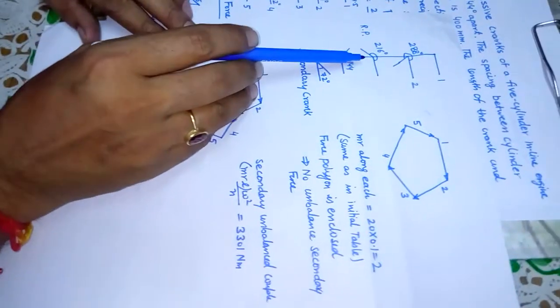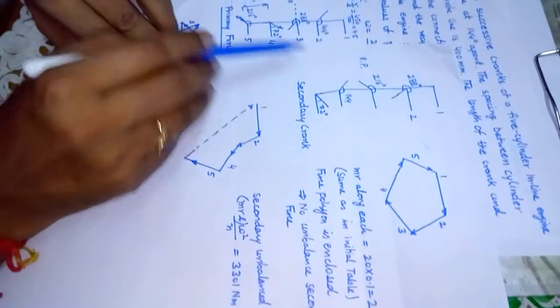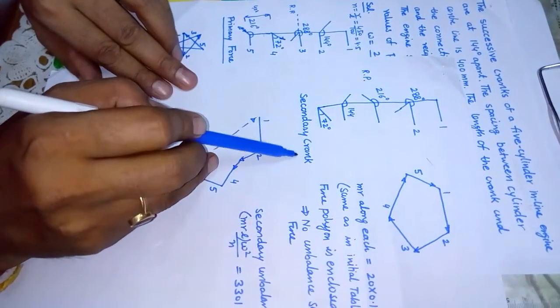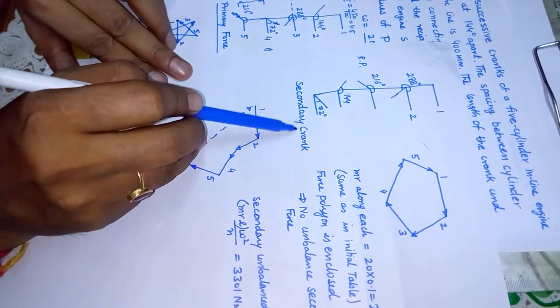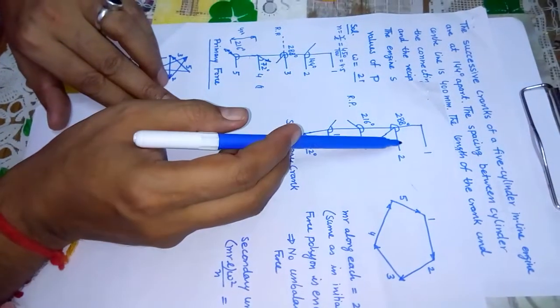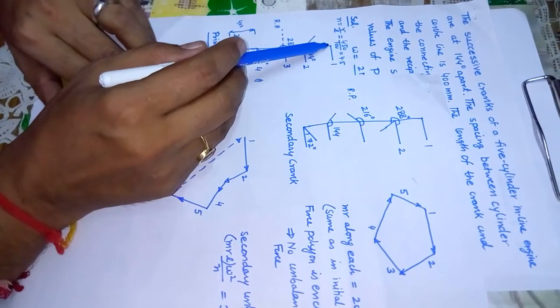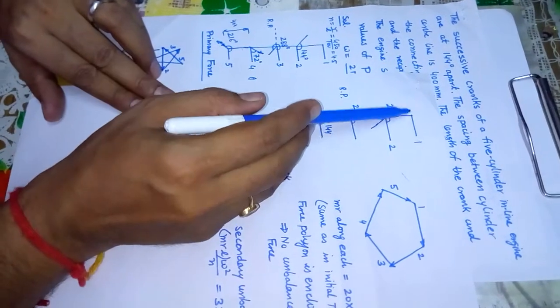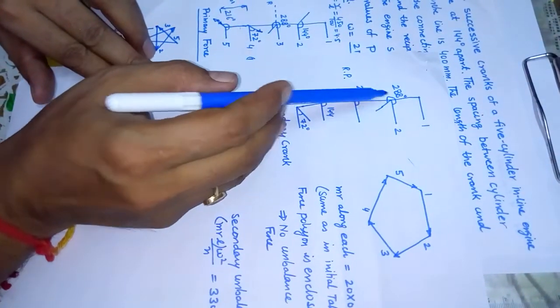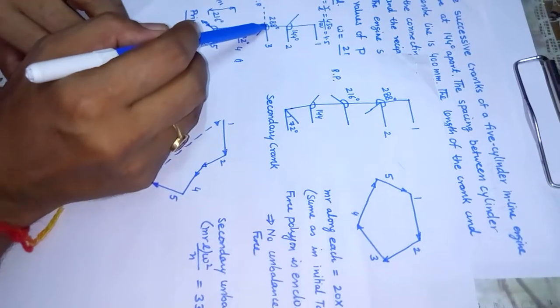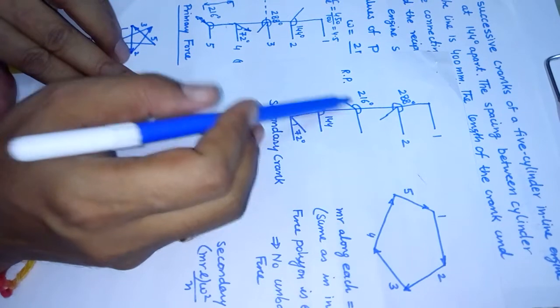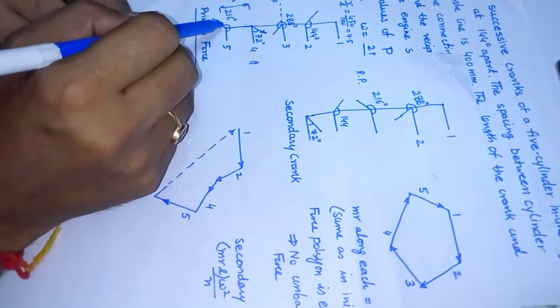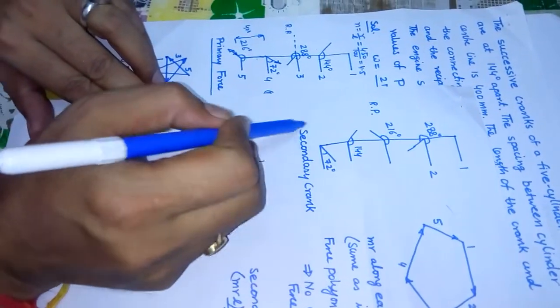To calculate secondary forces and couples, we reproduce the diagram with secondary crank positions, where all angles are doubled. Cylinder 1: 0×2 = 0°; cylinder 2: 144×2 = 288°; cylinder 3: 288×2 = 576°, subtract 360 = 216°; cylinder 4: 72×2 = 144°; cylinder 5: 216×2 = 432°, subtract 360 = 72°. These form the secondary crank position diagram.